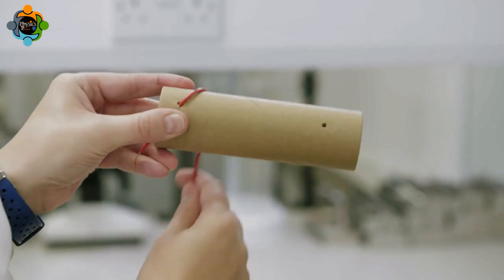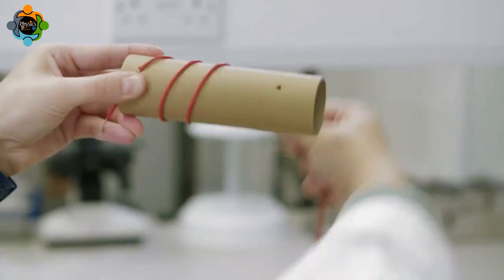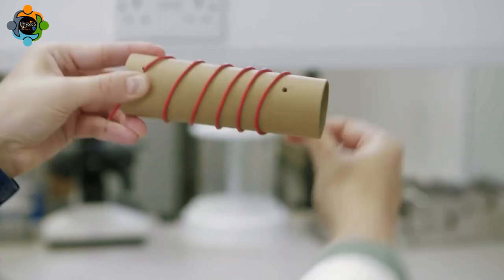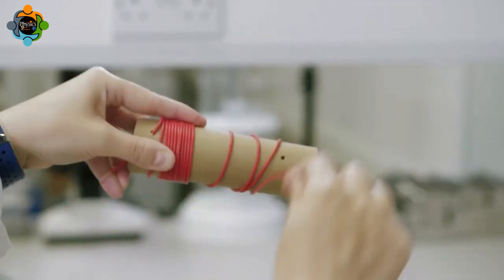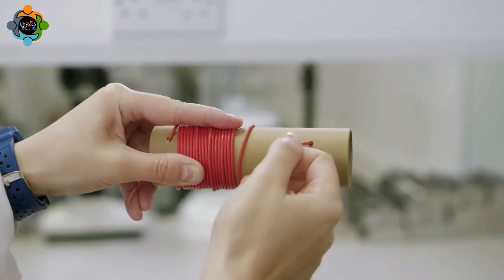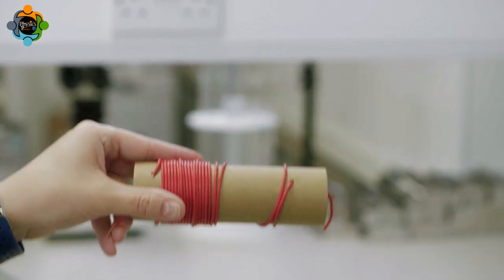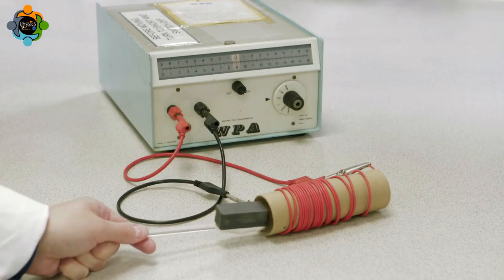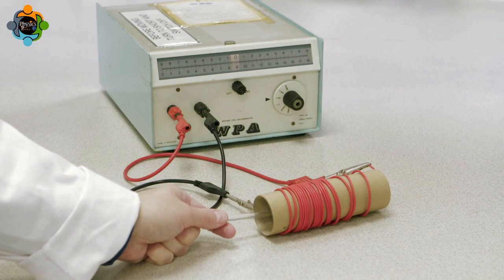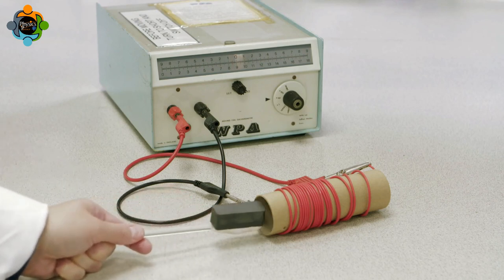A coil is formed by winding 20 turns of wire around a cardboard tube. An EMF is induced when a bar magnet is moved into the coil of wire. This produces a current through the coil.